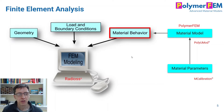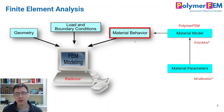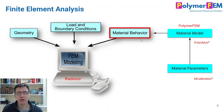Let's talk about finite element simulations generally. Finite element simulations of this type need three types of inputs: you need the geometry of the part you're interested in, you need the load and boundary conditions of the problem, and then you need the specification of the materials that these parts are made out of. The material behavior is where we sit and work in our company.